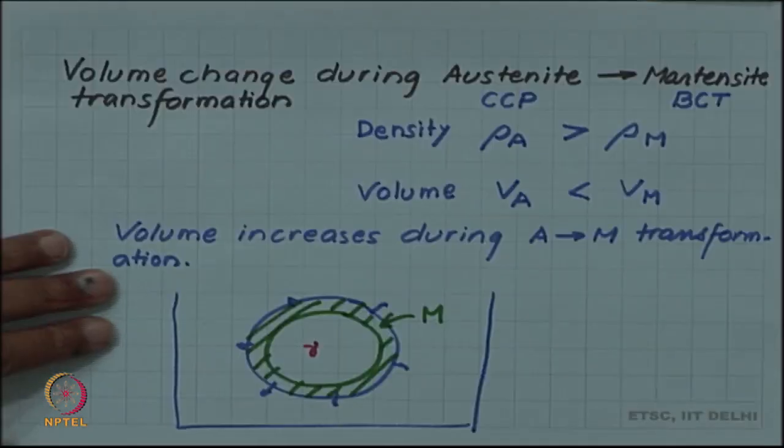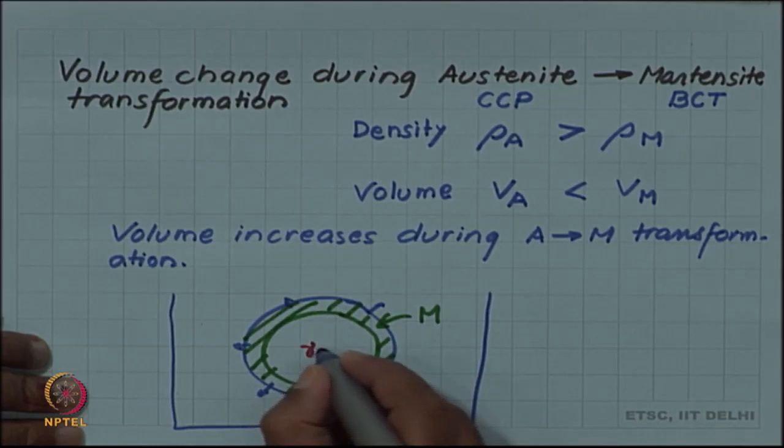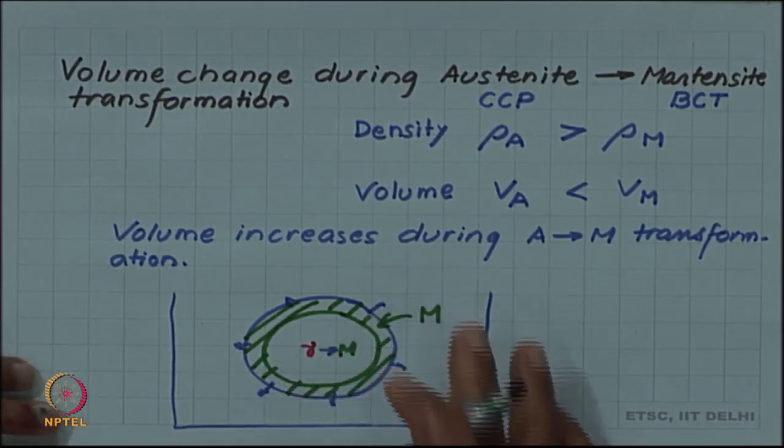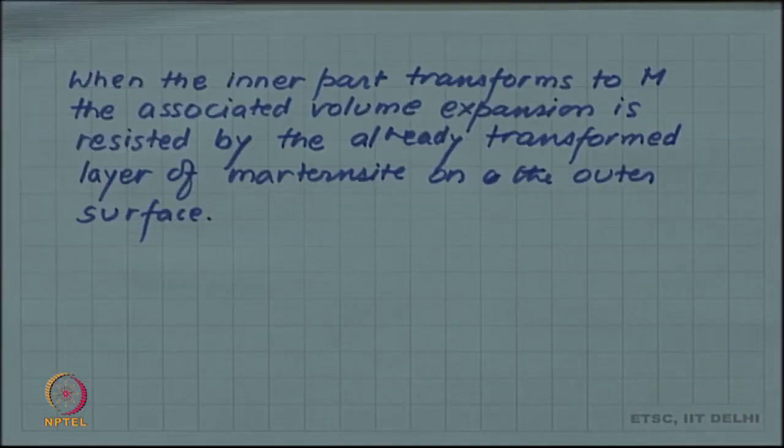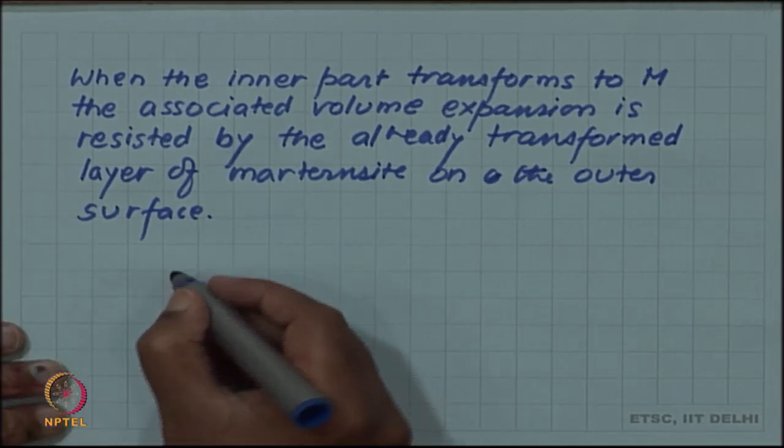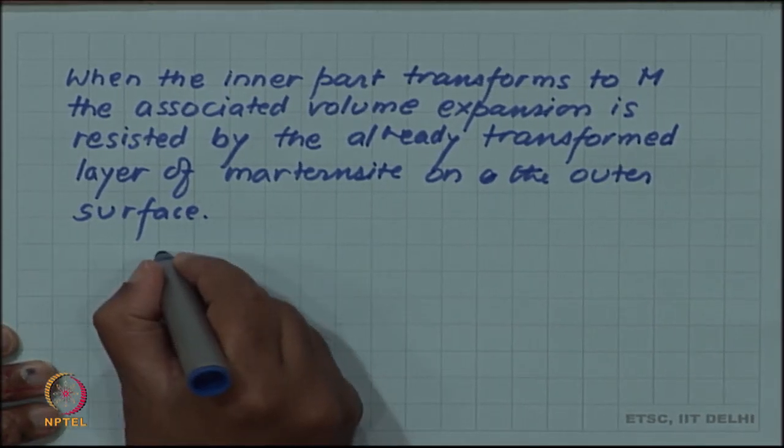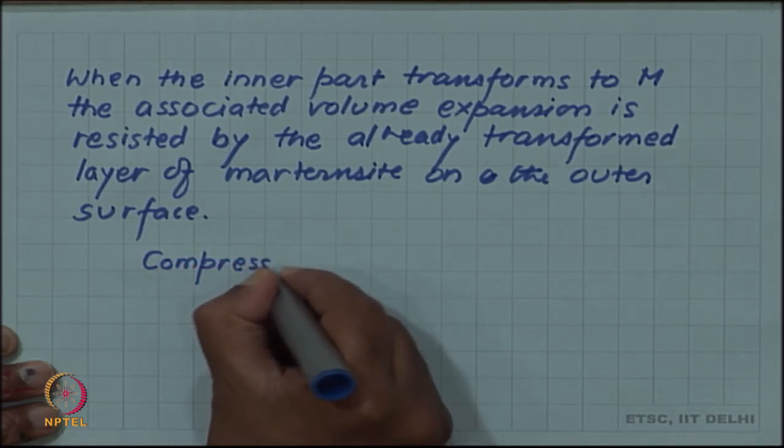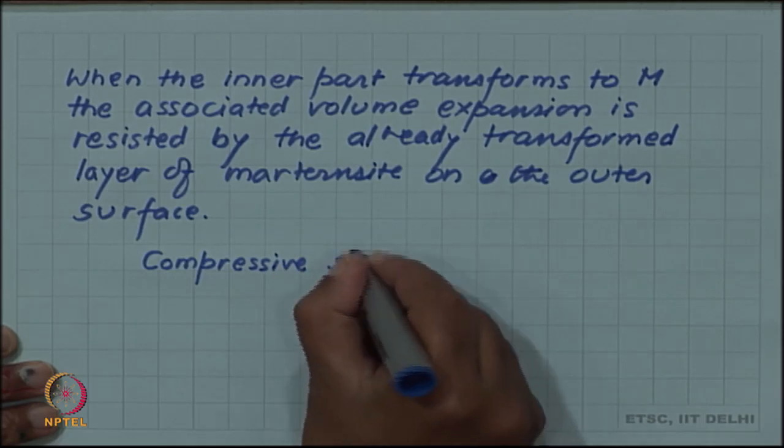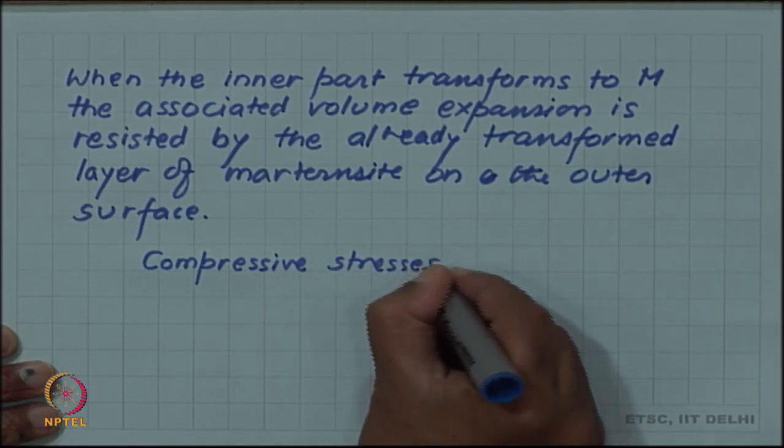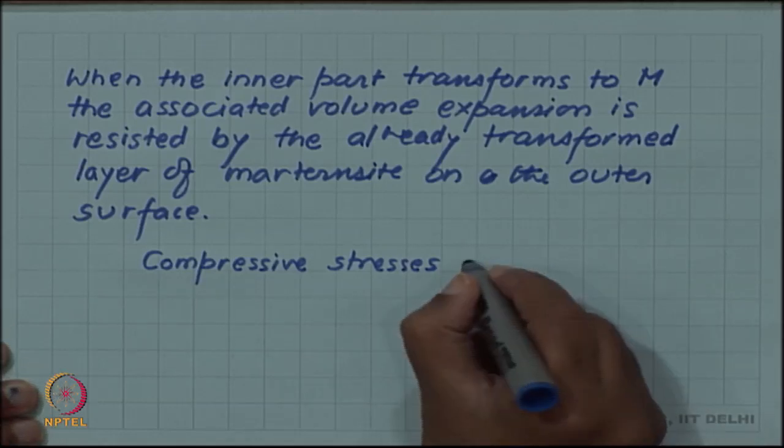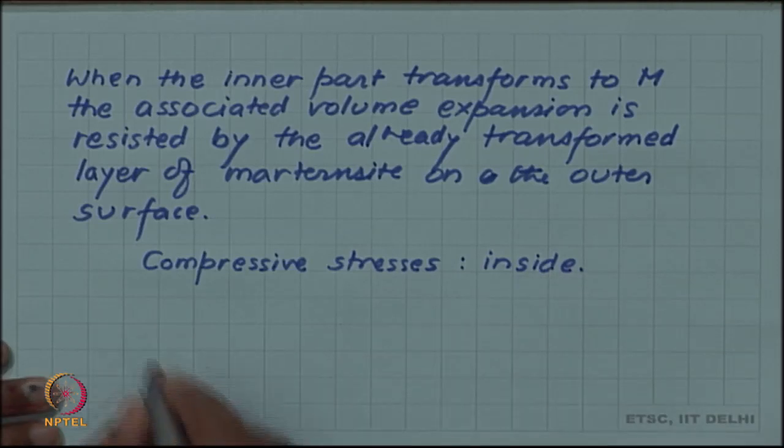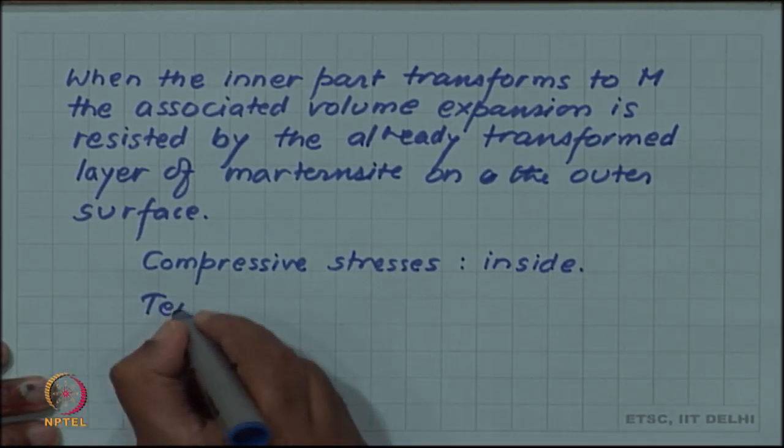So when this gamma wants to transform to martensite, when this will want to transform to martensite, it will also like to expand. That expansion is resisted, this will lead to compressive stresses. So compressive stresses on inside and correspondingly tensile stresses on the surface.